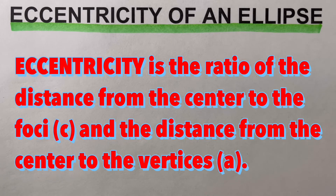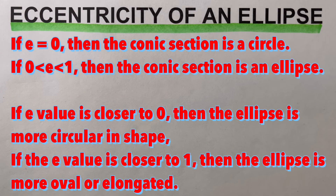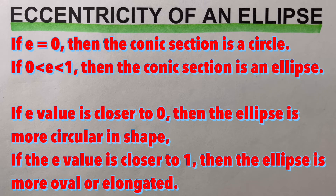Mathematically, eccentricity is the ratio of the distance from the center to the foci — which we usually represent as letter c — and the distance from the center to the vertices — which we usually represent as letter a. We remember that if eccentricity is equal to zero, then the conic section is a circle. On the other hand, if the eccentricity is greater than zero or less than one, we have an ellipse.